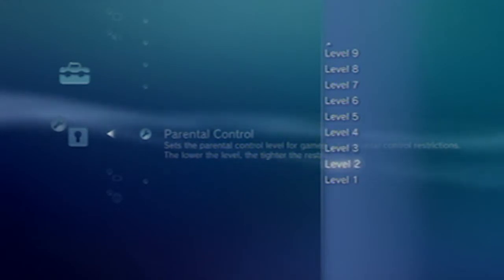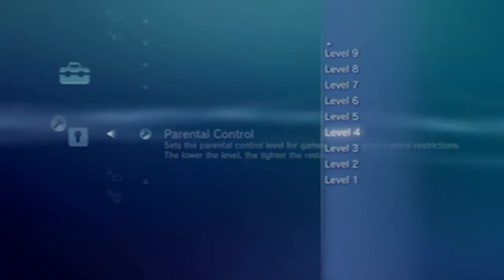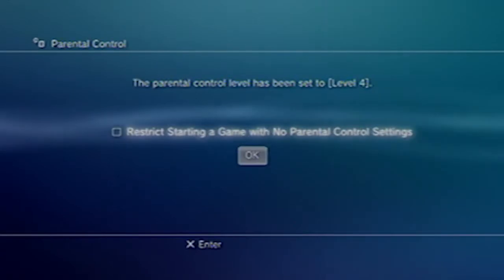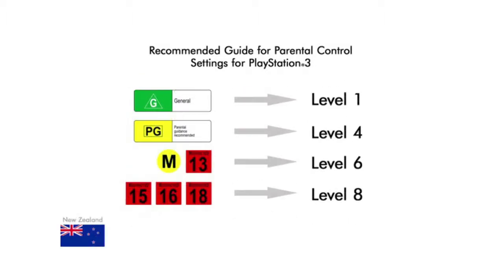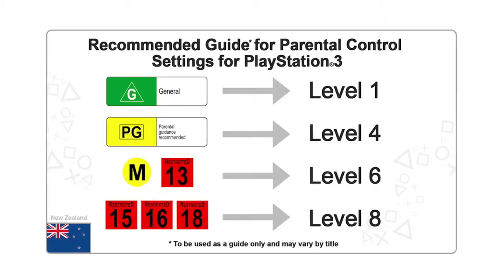The lower the number, the higher the restriction imposed. Each number corresponds with a rating category for games. All PlayStation games released in Australia and New Zealand are reviewed by national boards — in Australia by the Classification Board, and in New Zealand by the Office of Film and Literature Classification, or the OFLC.